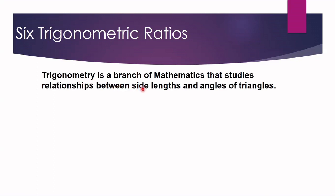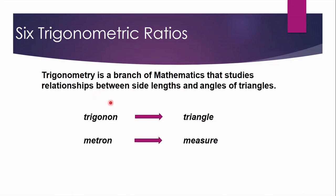Trigonometry is a branch of mathematics that studies relationships between side lengths and angles of triangles. It comes from the Greek word trigonon, which means triangle, and also from the Greek word metron, which means measure. So based on this, trigonometry involves the measurements of triangles — specifically, the measures of the lengths of the sides and angles of a triangle.